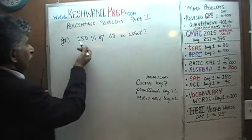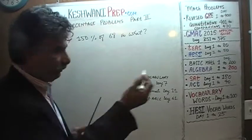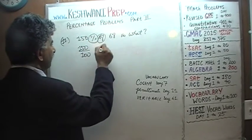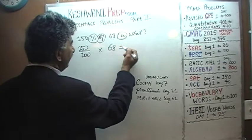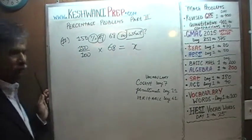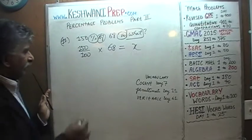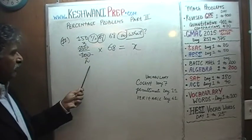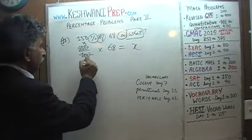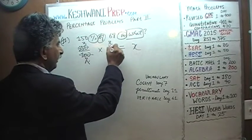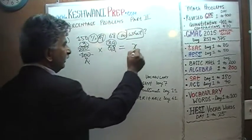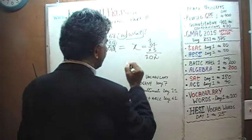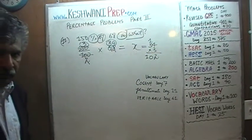150% algebraically means we set up an equation: 150 over 100, times 68, equals x. Divide top and bottom by 50: 150 becomes 3 and 100 becomes 2. We have 68 over 2, so divide top and bottom by 2: 68 becomes 34. The answer is 34 times 3, which is 102.